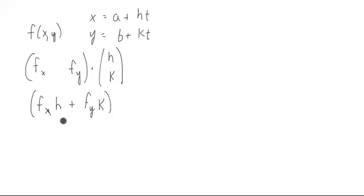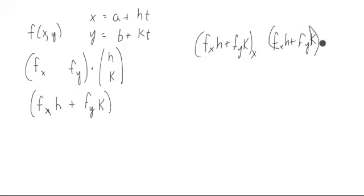If we wanted to do a second derivative, we do a similar thing. What we do is we take this—notice this is just a function with one output. It has two inputs, but one output, so we treat it the exact same way. We would take this fx h plus fy k, and we would take the derivative with respect to x and with respect to y.